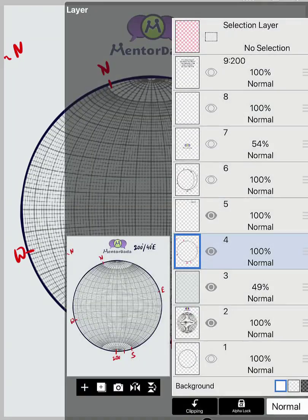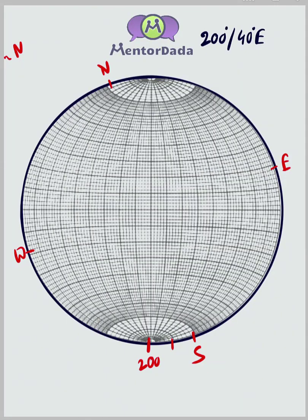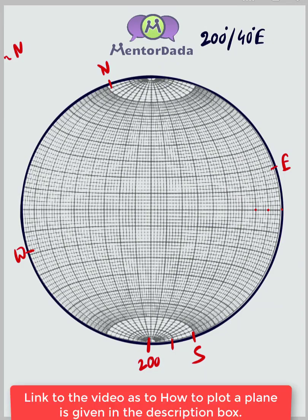And as we know that the plane is dipping towards the east and the dip amount is 40 degrees. So as this portion is the east portion, we will go 40 degrees away from the primitive circle as it is dipping 40 degrees. So this is 10, this is 20, this is 30 and this is 40. So this is the required plane.